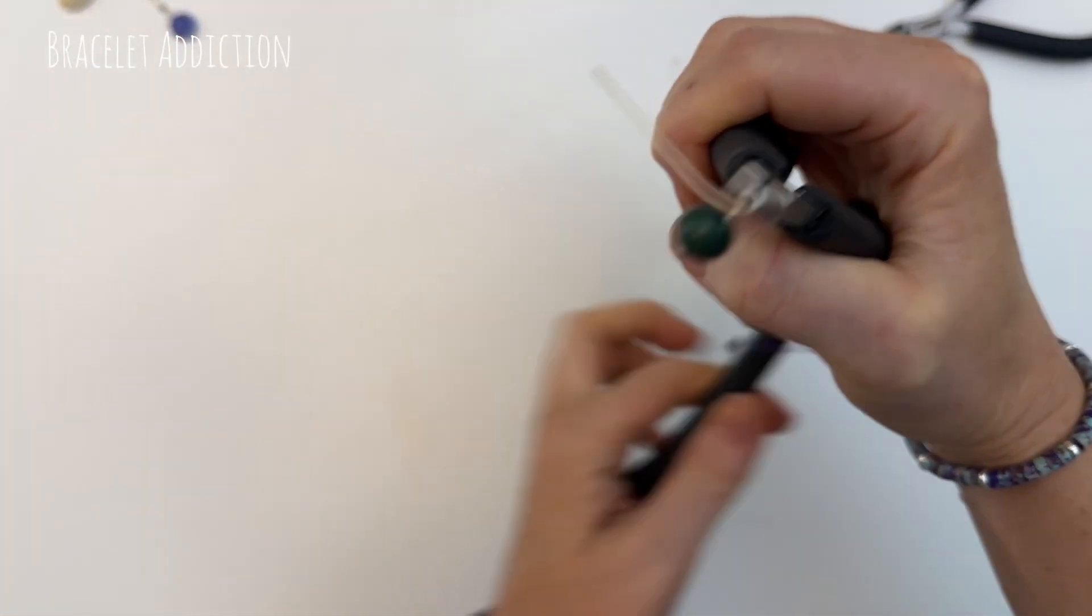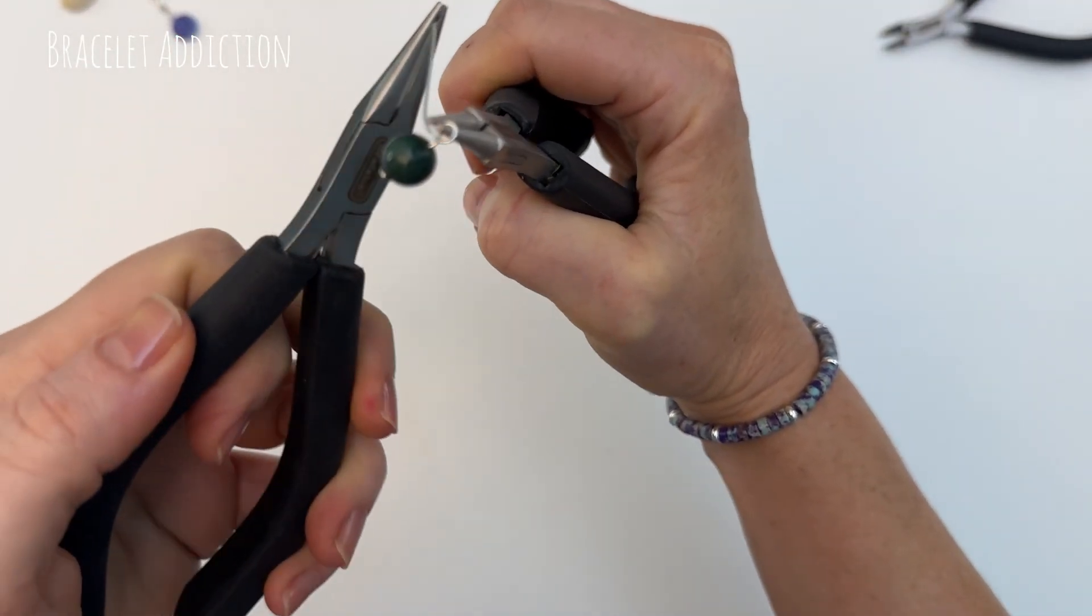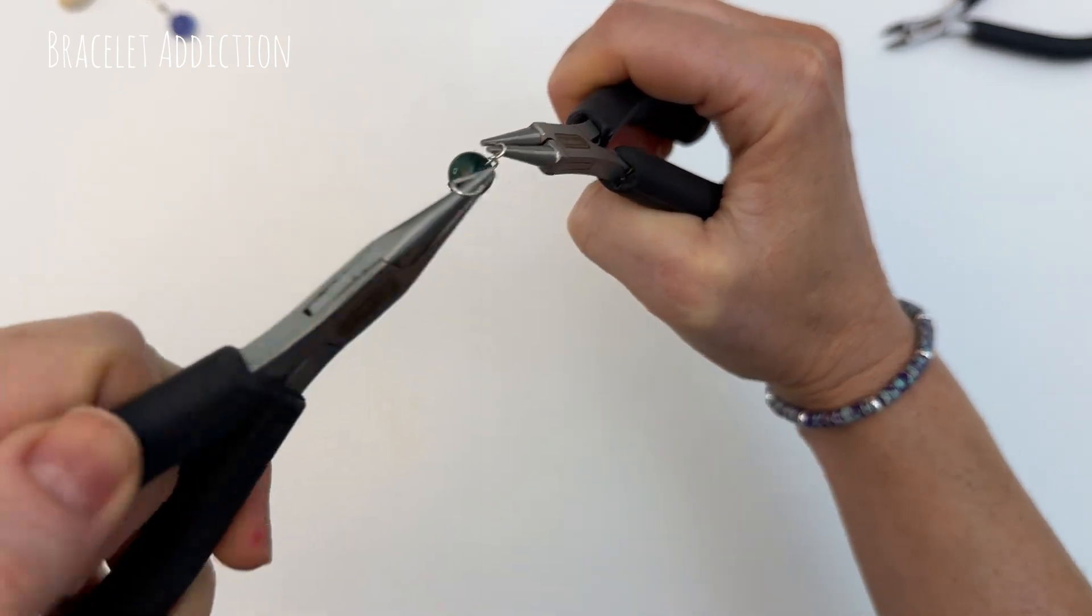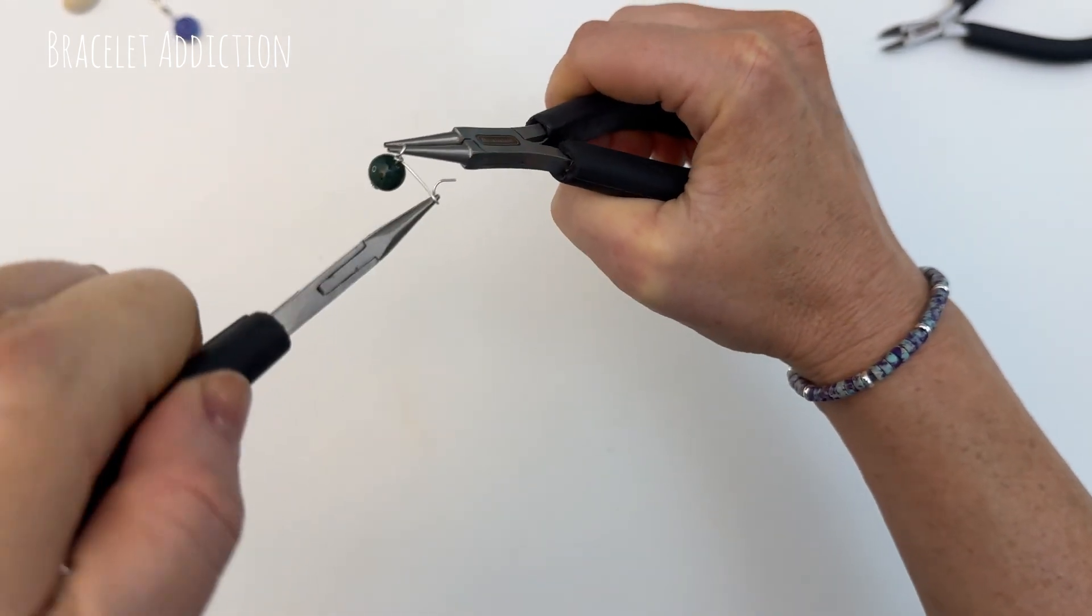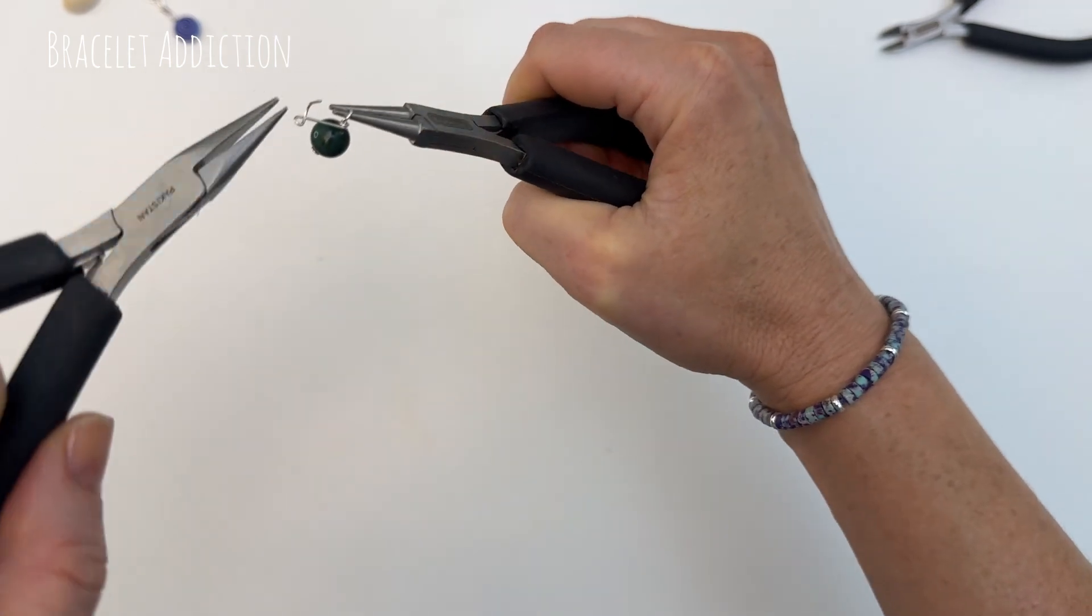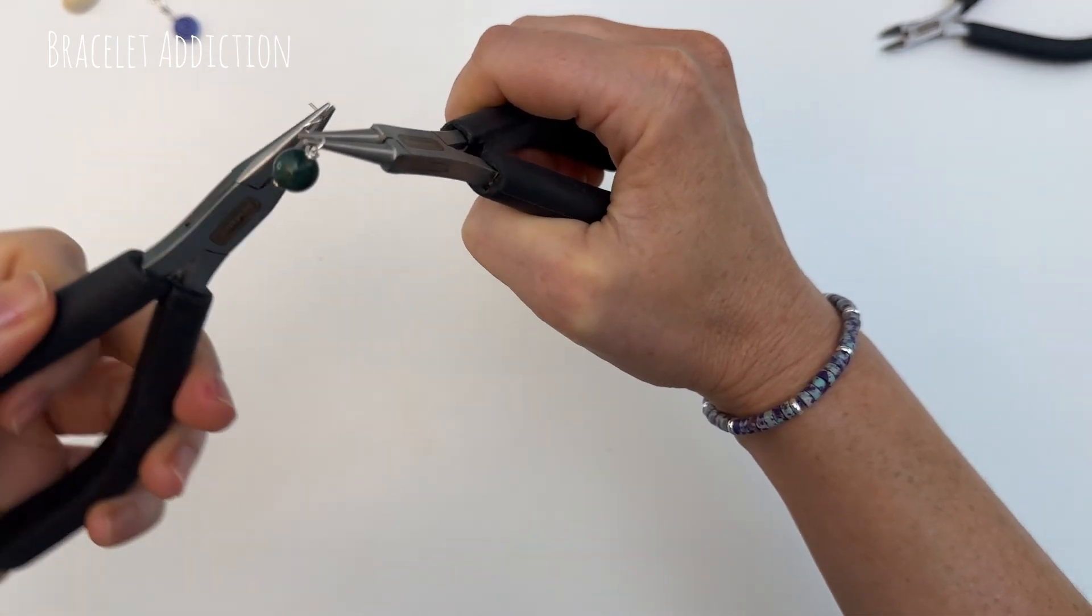To secure this loop we just continue bringing this wire end around the base, so in between the bead and the loop, bringing it around a couple of times nice and tight and tidy to hold that bead secure.